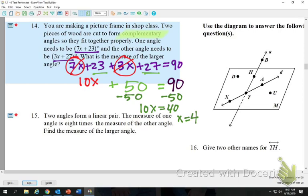The only reason I subtract the 50 is to get it across the equal sign. So I have 10x equals 40, so x equals 4. This is not my final answer. What does it want me to find? The measure of the larger angle. So measure means I'm going to have a number and degrees answer. I cannot tell by just looking at them which one's going to be the larger answer.